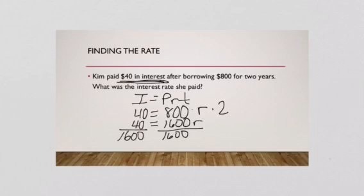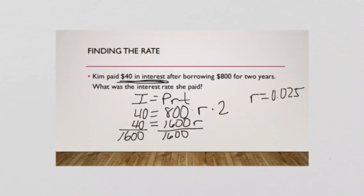Our answer is R equals 0.025. But that's a decimal — we have to move it over to get our percent. So R equals 2.5%.